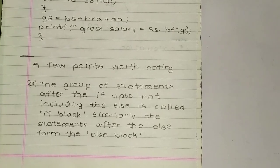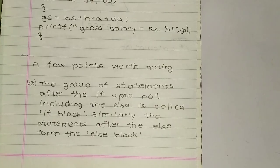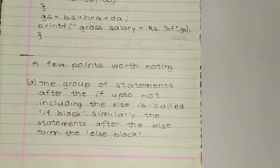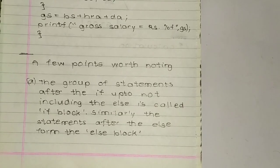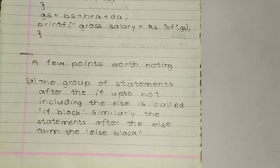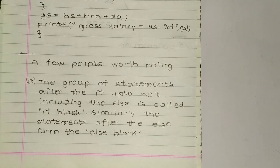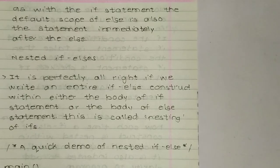A few points worth noting in a gross salary program — that is, an if-else statement program. The group of statements after the 'if', up to but not including the 'else', is called the if block. Similarly, the statements after the 'else' form the else block. So statements before else form the if block, and statements after else form the else block.